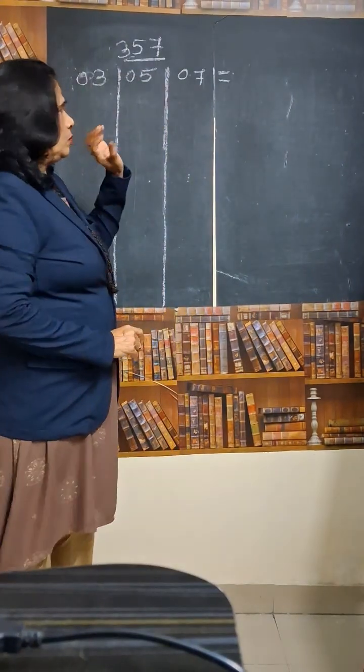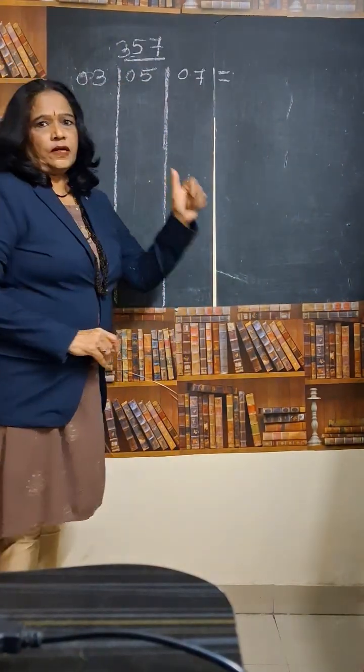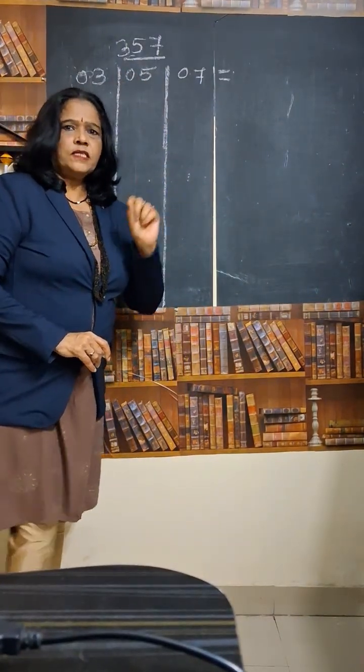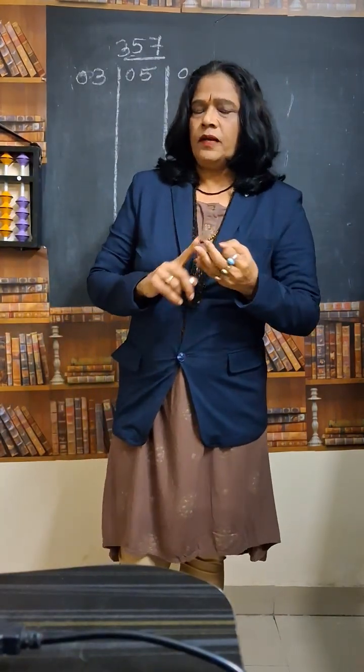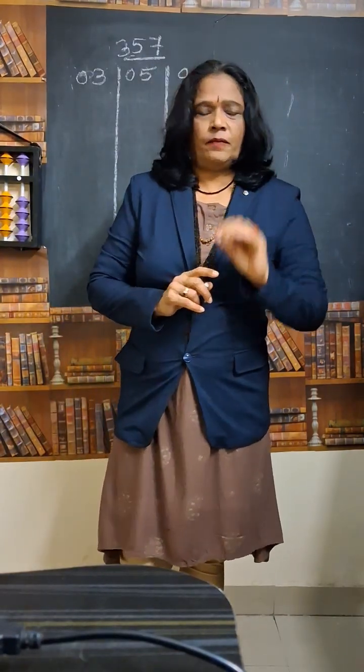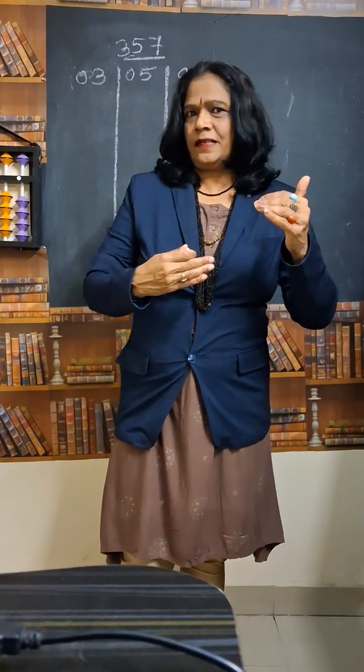See first what I will do. We have 3 numbers: 3, 5, and 7. First let us write the tables of 3, then tables of 5, and then the tables of 7. All the 3 tables, let us write it separately.